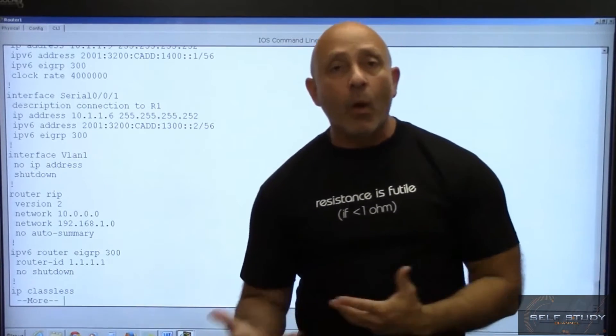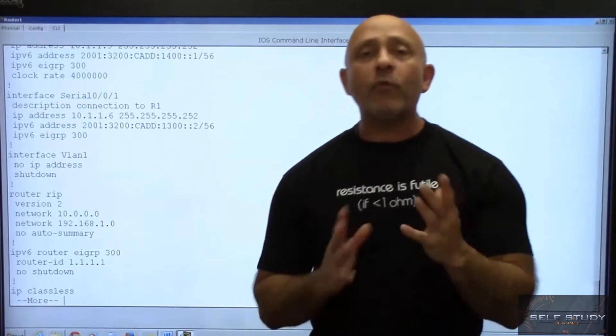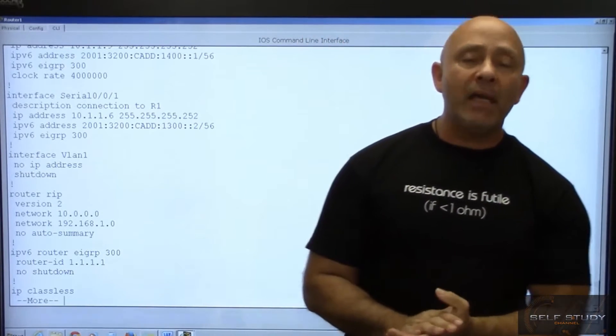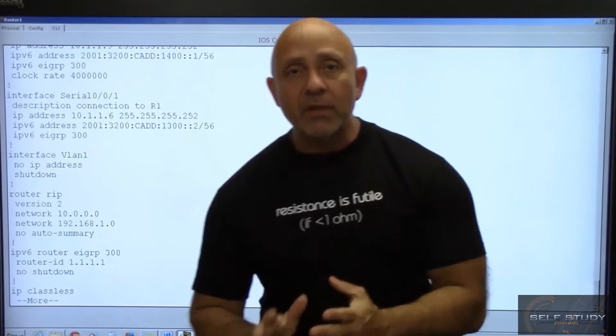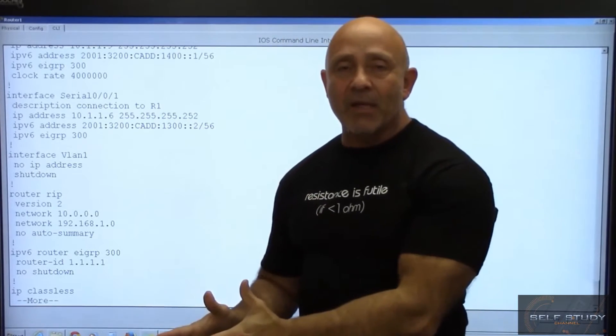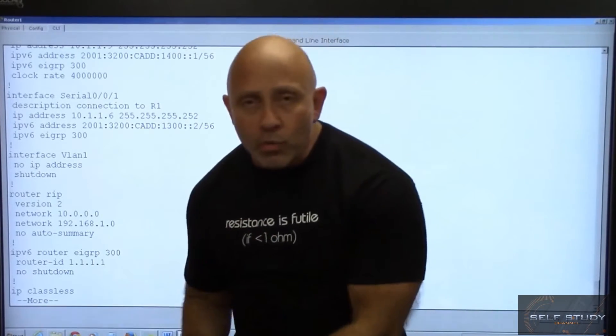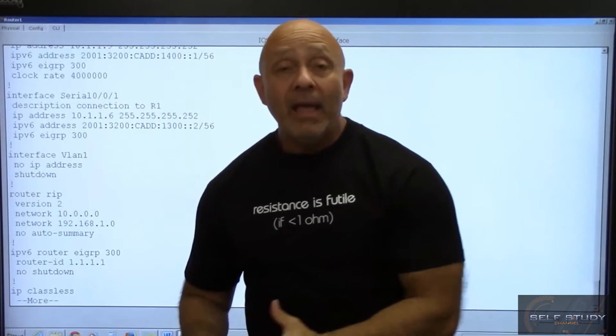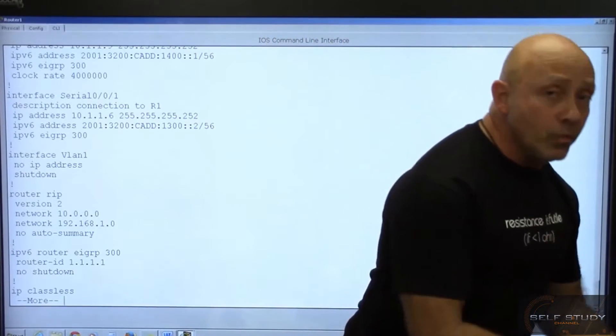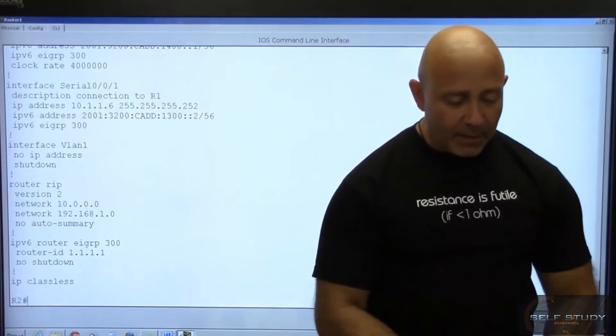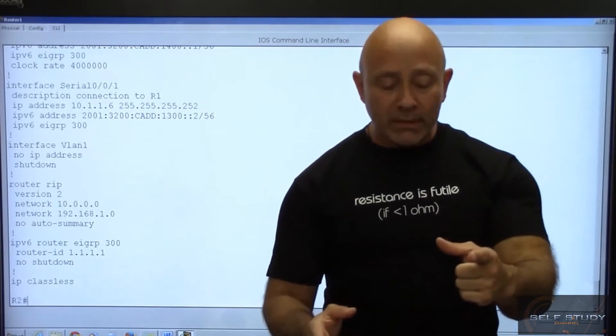Of course, so you would think, well wait a minute, isn't the EIGRP then going to take over the routing table? Well of course not. It would if it was IPv4, but since we're running an IPv6 EIGRP it creates its own routing table and IPv4 creates its own routing table. Let's check that out.